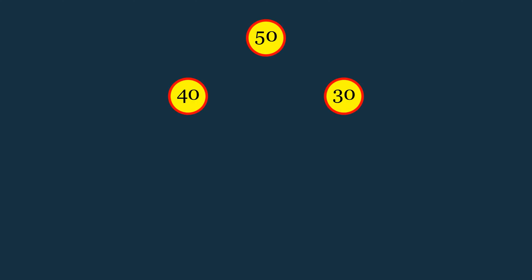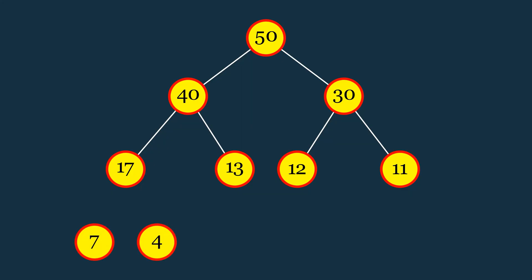Let's dive into how heaps work, focusing specifically on binary heaps. A heap is structured as a complete binary tree, meaning that every level of the tree is fully filled except possibly the last, which fills from left to right.